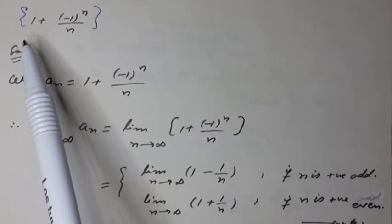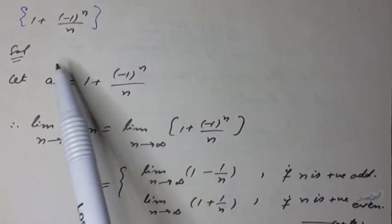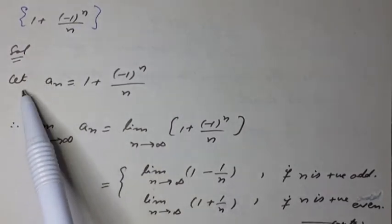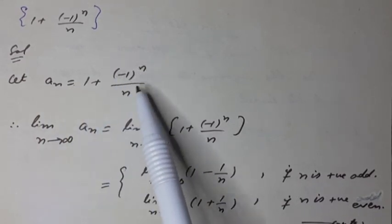Check the convergence of the sequence: 1 plus (-1)^n over n. Solution: Let nth term a_n is equal to 1 plus (-1)^n over n.